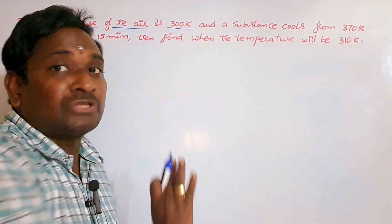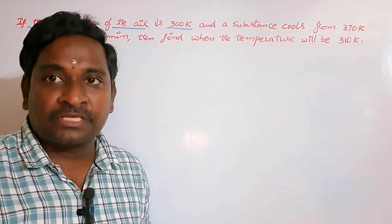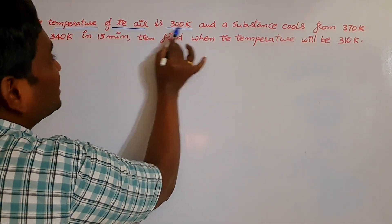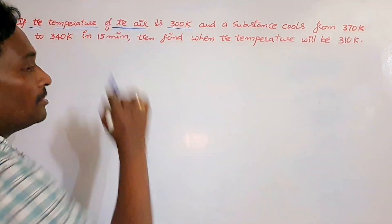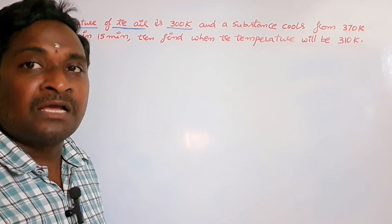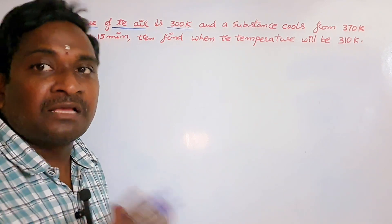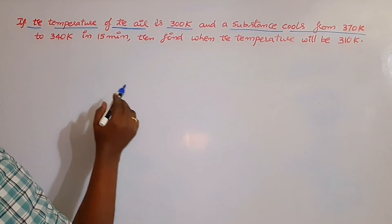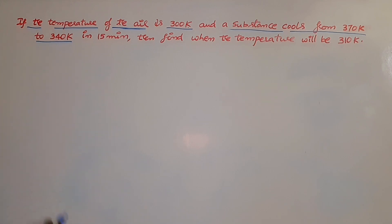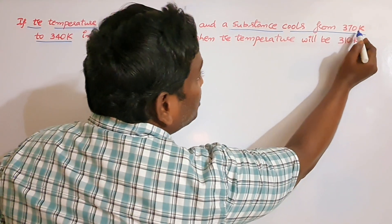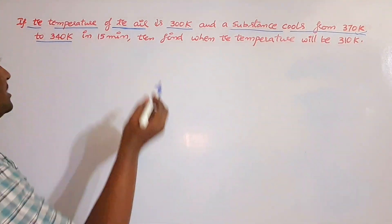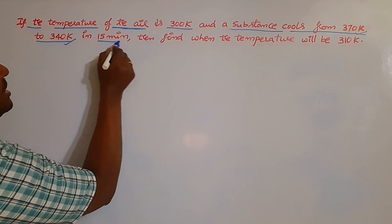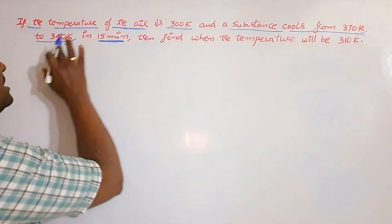Whatever unit the problem uses, we work in the same unit without needing to change it. The temperature of the air is 300 Kelvins — this is the room temperature, surrounding medium temperature, or air temperature; they are the same. A substance cools from 370 Kelvins originally down to 340 Kelvins in 15 minutes.